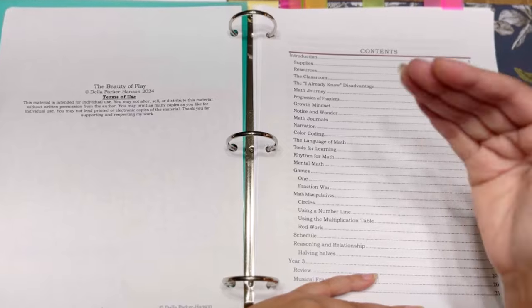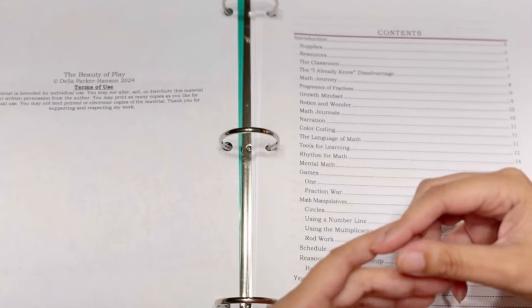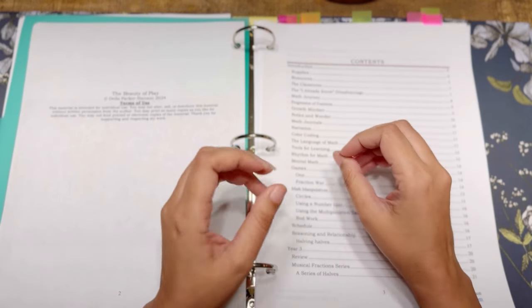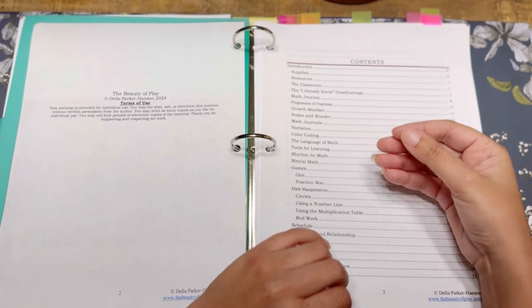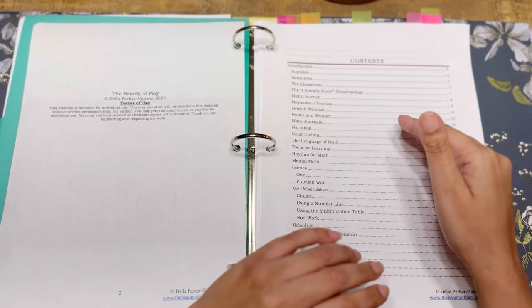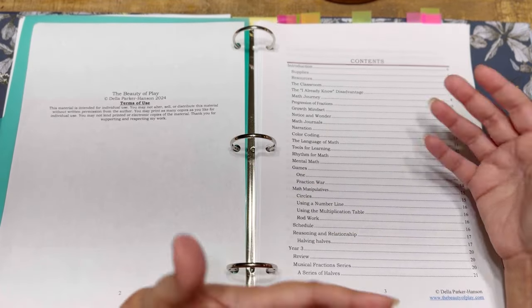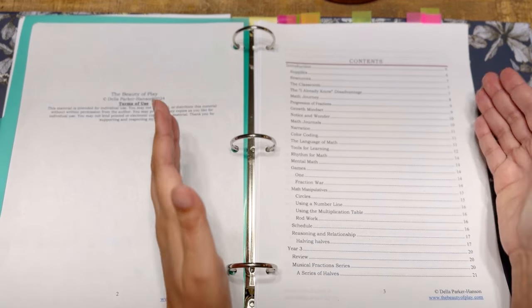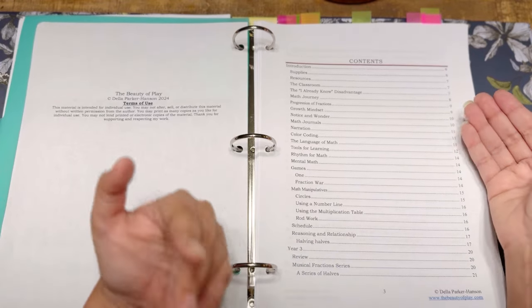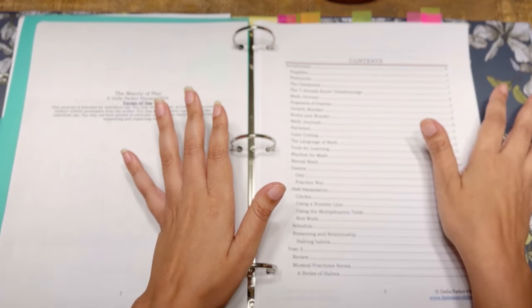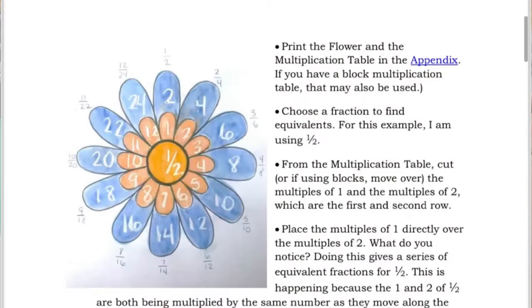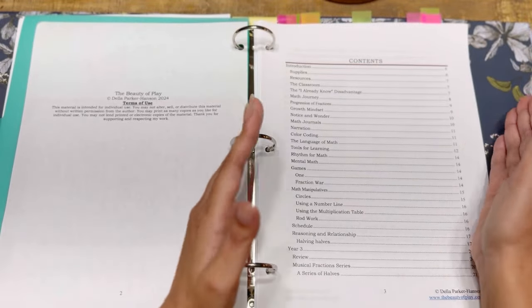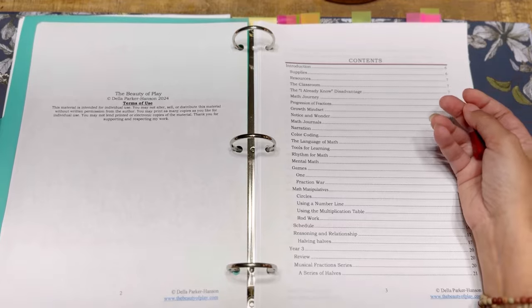You're going to have the rhythm of math. You're going to have a suggested, maybe you're thinking this is going to be too open-ended for me. There is some suggestion of scheduling. If you're someone that needs more direction in that aspect, but the rhythm of it is really just like go with whatever works for you and how often you need to do it. There is a math journals, narration, color coding. You're going to have a mental math.